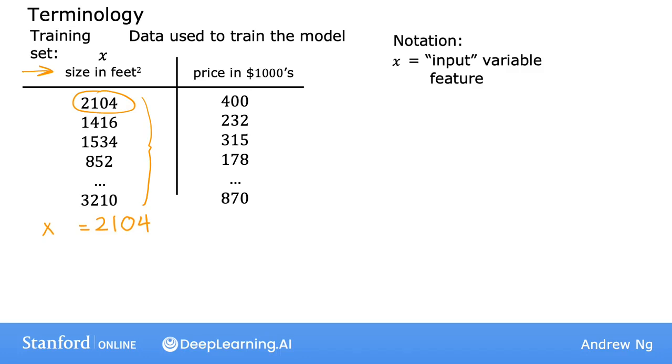The standard notation to denote the output variable, which you're trying to predict, which is also sometimes called the target variable, is lowercase y. And so here, y is the price of the house. And for the first training example, this is equal to 400, so y equals 400.